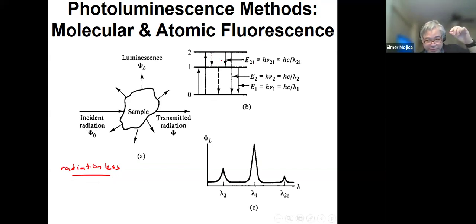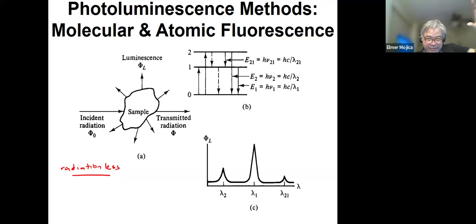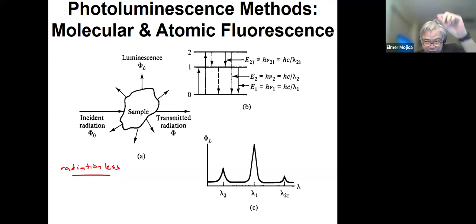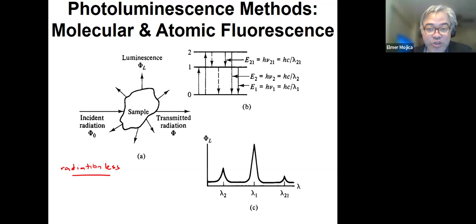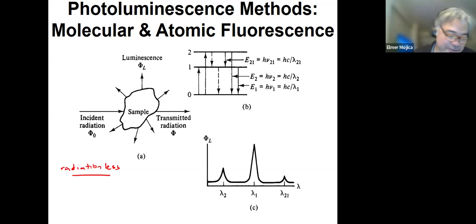If you're going to look at this Jablonski diagram, usually what you see here is not a straight-down emission. The way you see it is that you have energy levels at the singlet state. When it is excited, it doesn't go straight down — it passes through some non-radiative processes. If it goes down in the singlet state, that's fluorescence. If it passes through the triplet state, that's phosphorescence.